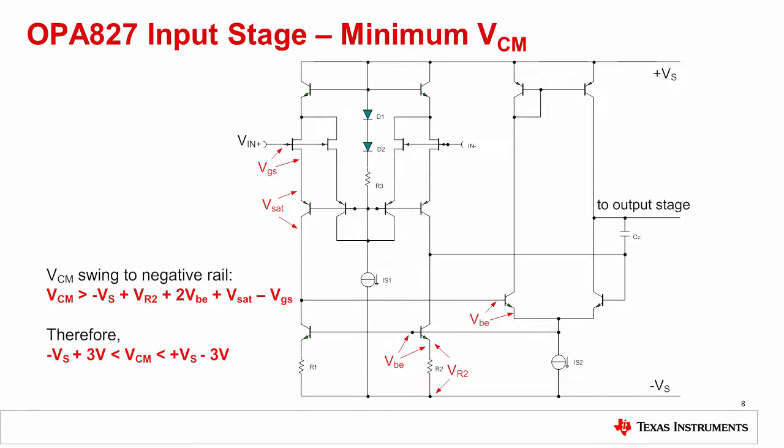For this topology, we will only analyze the common mode swing to the negative rail using the same method as before. We will omit the details for brevity, but the common mode limit is 3 volts from either rail. The important point here is that the bipolar input topologies will generally have common mode limitations to both power supply rails, while CMOS topologies can achieve common mode voltage range to either or both rails. This is because in CMOS devices, the VDS saturation voltage can be adjusted through transistor sizing, while in bipolar devices, the saturation voltage is fixed.